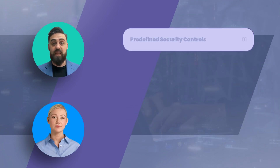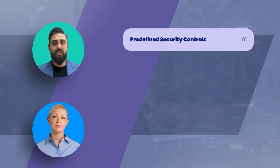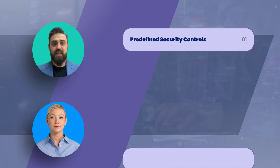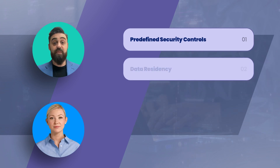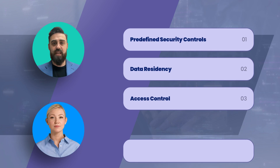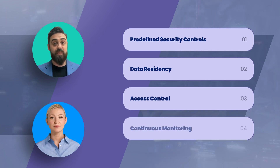What are some of the key features of Assured Workloads? Assured Workloads offers several key features: predefined security controls aligned with compliance frameworks like FedRAMP, CJIS, HIPAA, and more. It ensures data stays within specified regions to meet data sovereignty requirements. There are strict access control measures to ensure only authorized personnel can access sensitive data, and automated monitoring and logging to detect and respond to potential security threats.